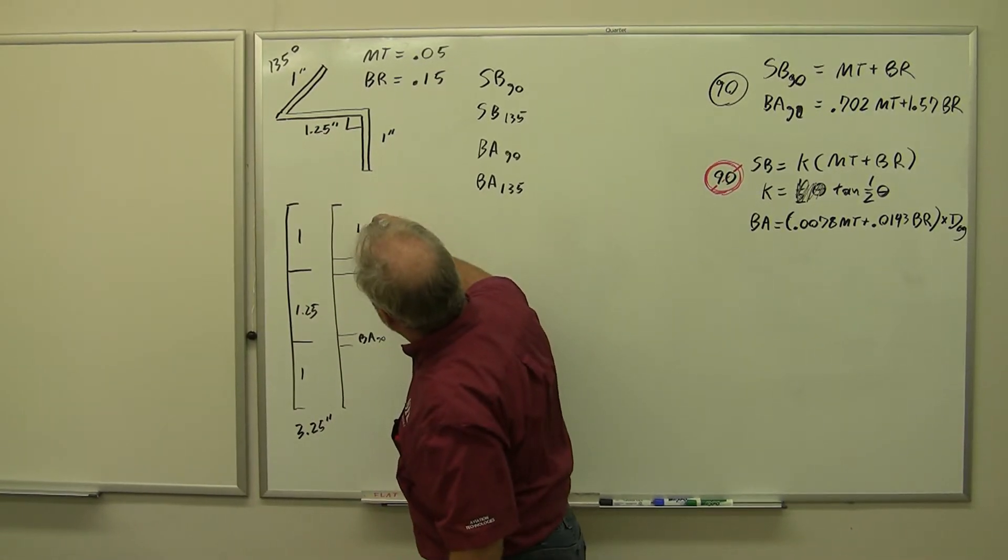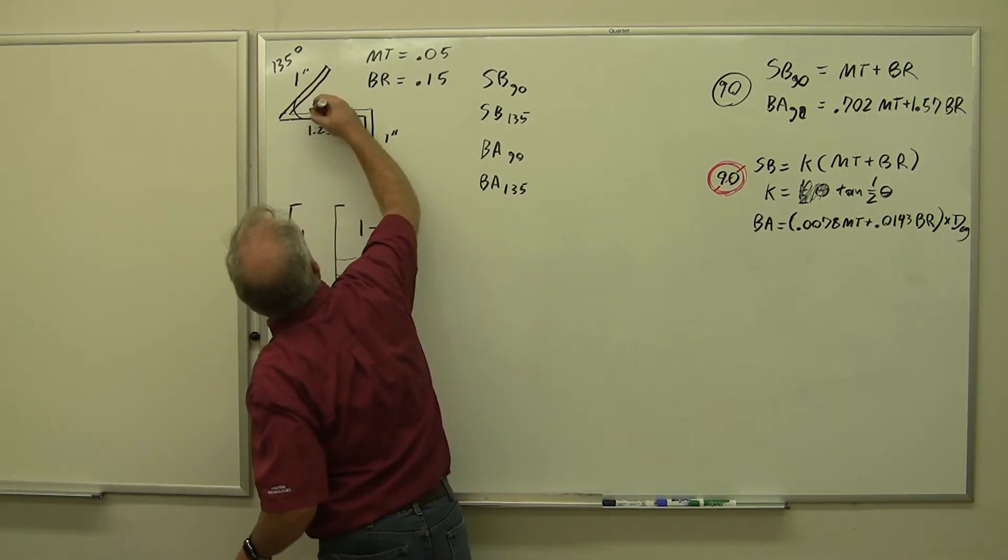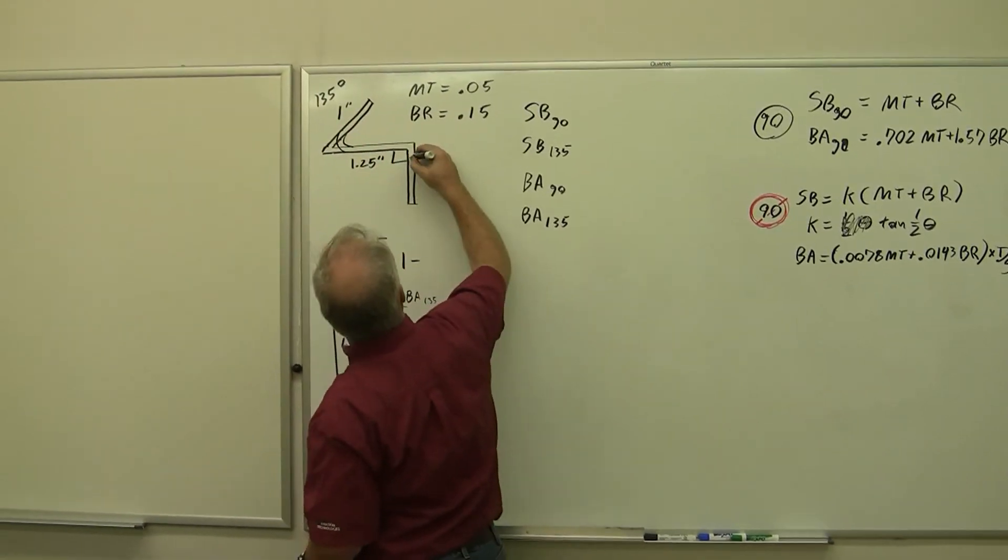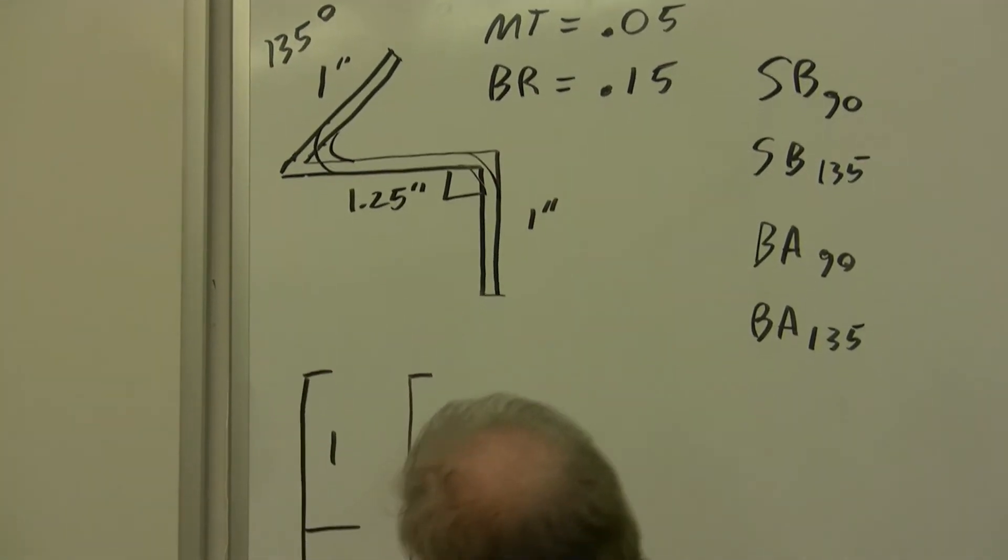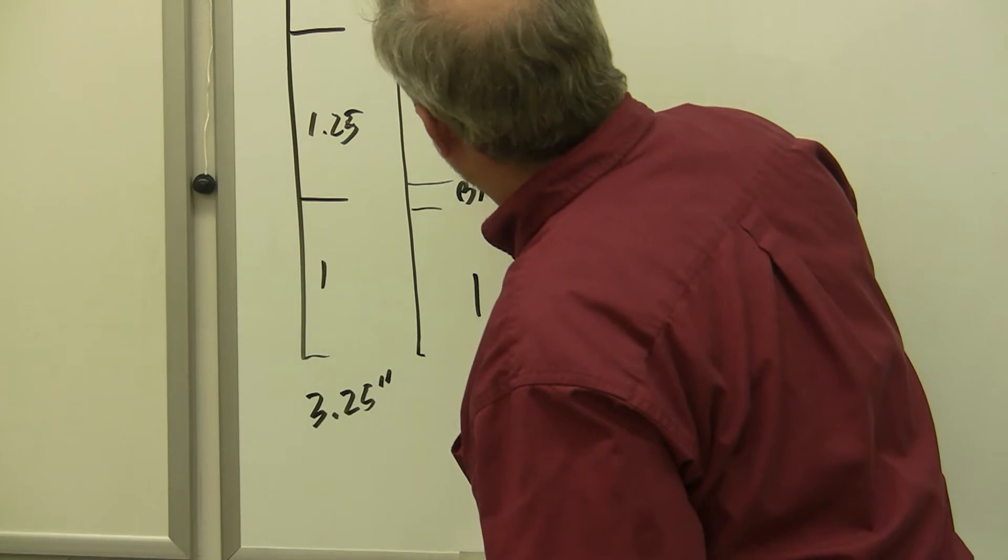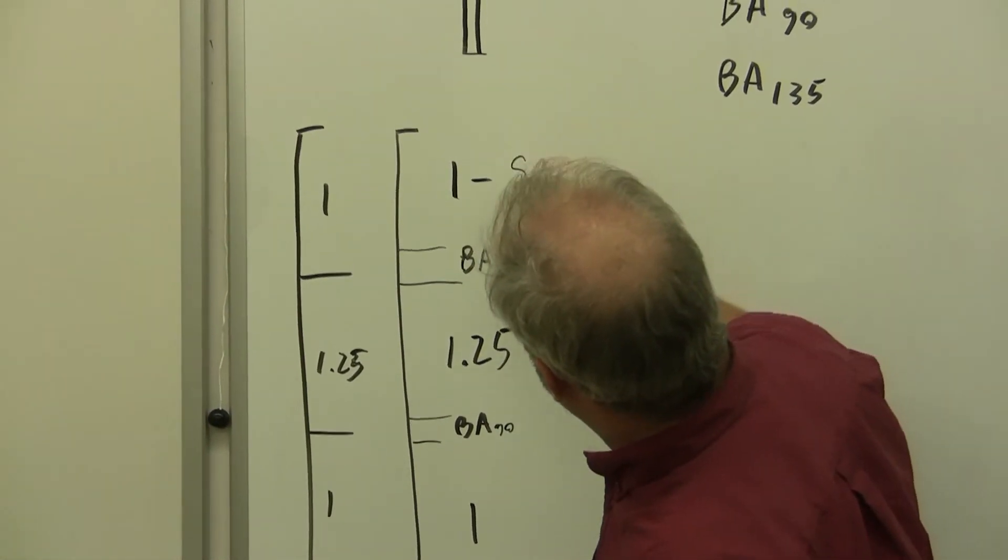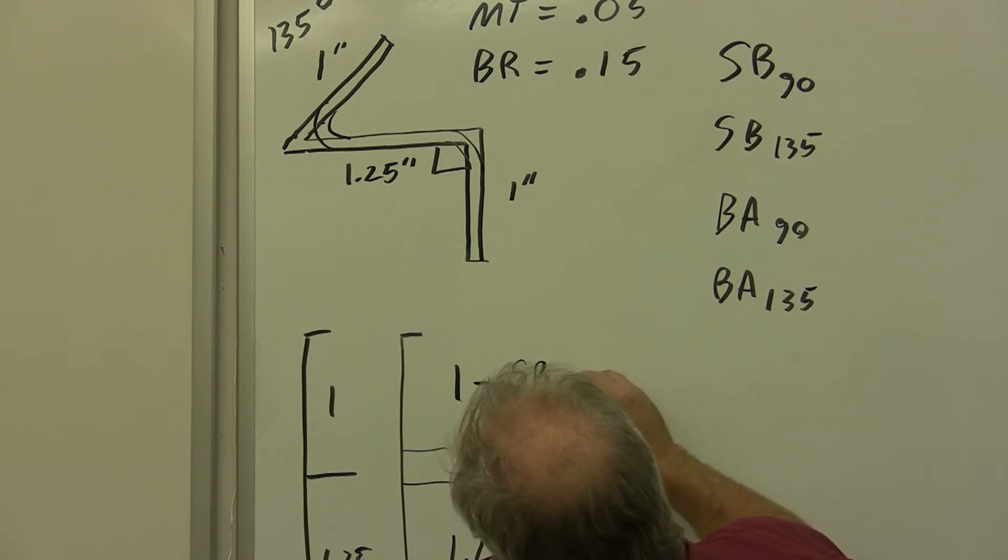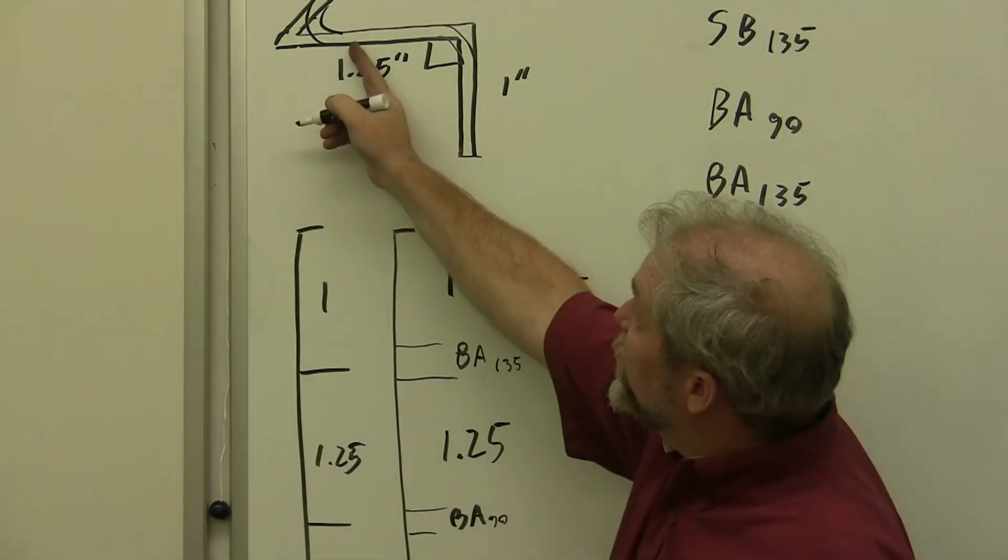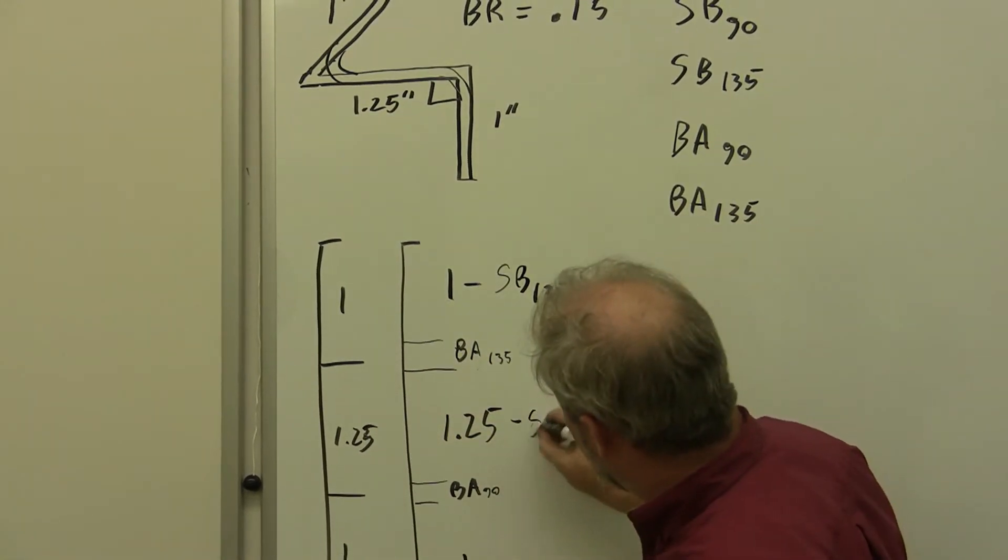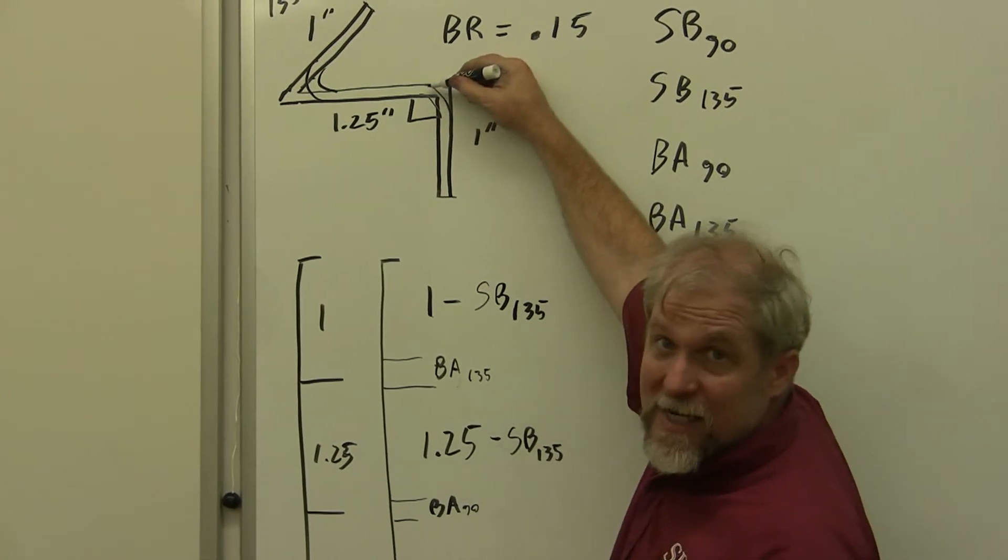This is going to be 1 minus the setback of this angle, and this is going to be 1.25 minus the setback 135 and minus the setback 90.